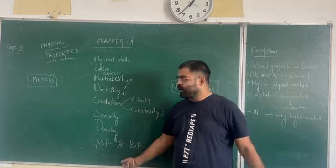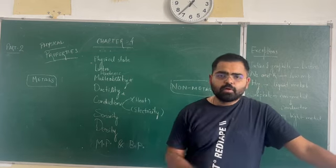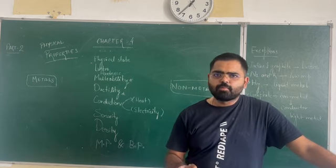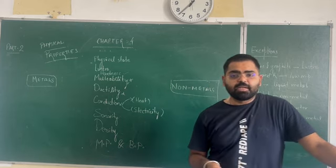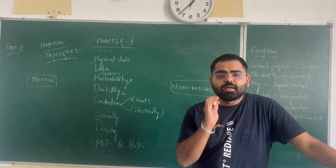Melting point and boiling point are very low as compared to that of metals. These are the general properties that we have to understand: physical state, lustre, malleability, ductility, hardness, melting point, boiling point, and so on.